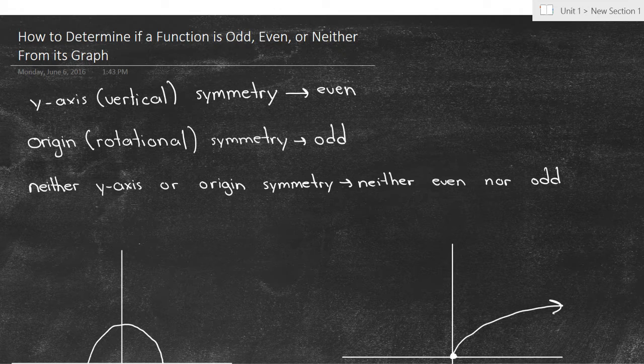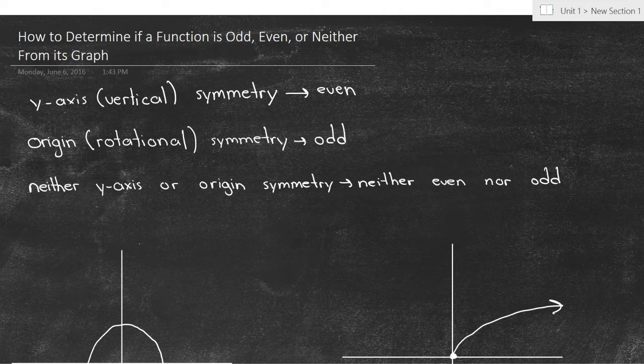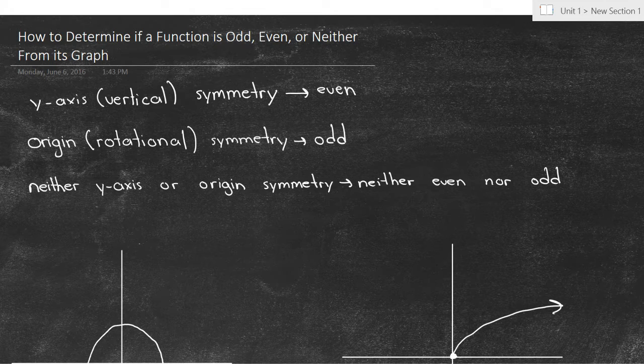which means you can reflect over the y-axis and the graph would be the same. And there's origin symmetry, which is rotational symmetry, if the function is odd, which means we could turn the graph like 180 degrees, and it might be the exact same graph you had before.